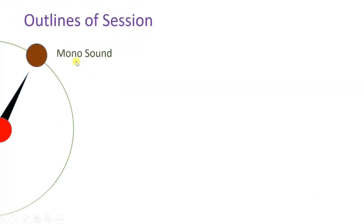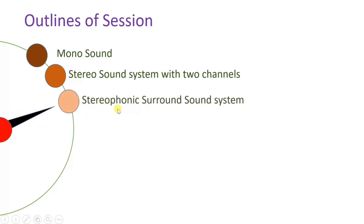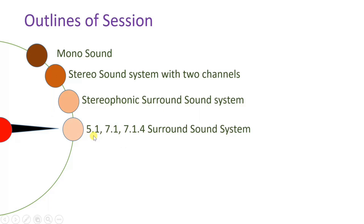First I'll explain mono sound system. After that I'll explain stereo sound system with two channels, and after that I'll explain stereophonic surround sound system, giving examples of sound systems with 5.1, 7.1, and 7.1.4 surround sound, including how we position speakers in those systems.